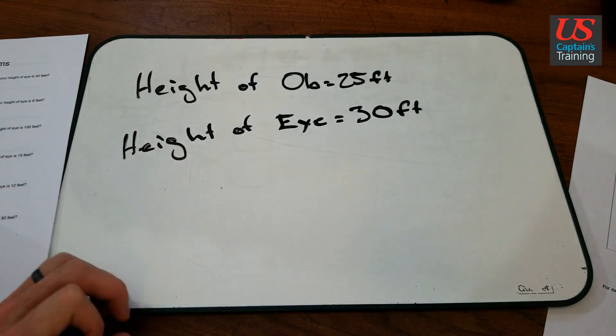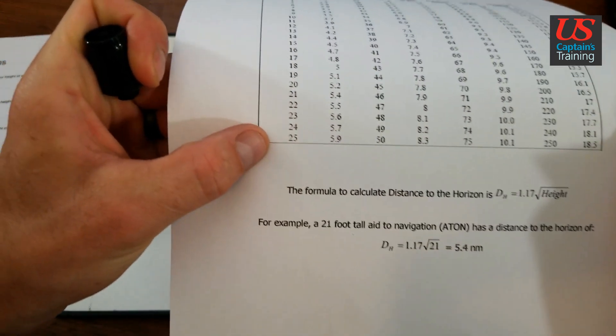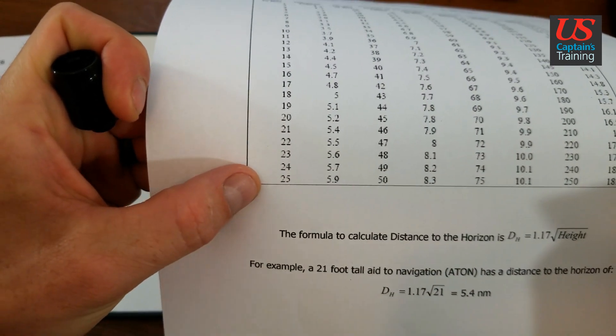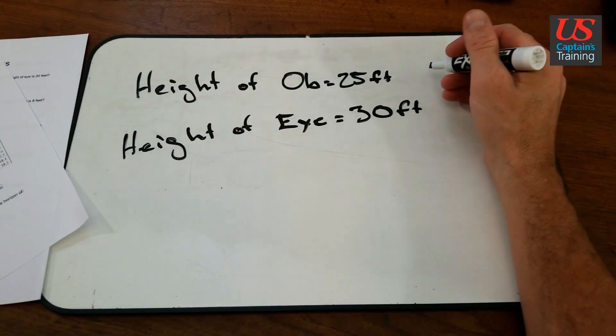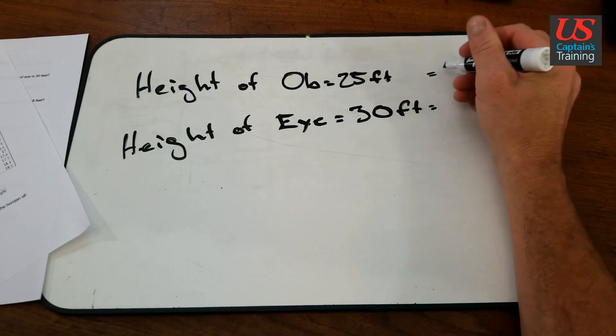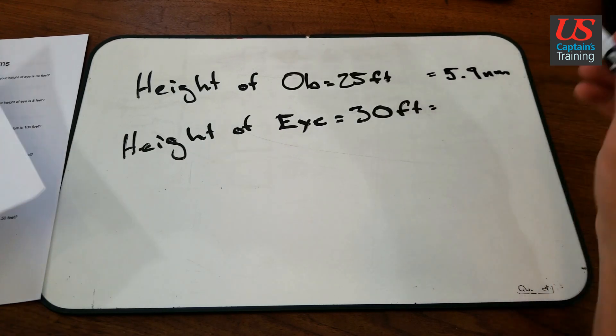So we go to our distances to the horizon table and we look at 25 feet. There you can see 25 feet is 5.9 nautical miles to the horizon. So it's 5.9 nautical miles to the horizon.